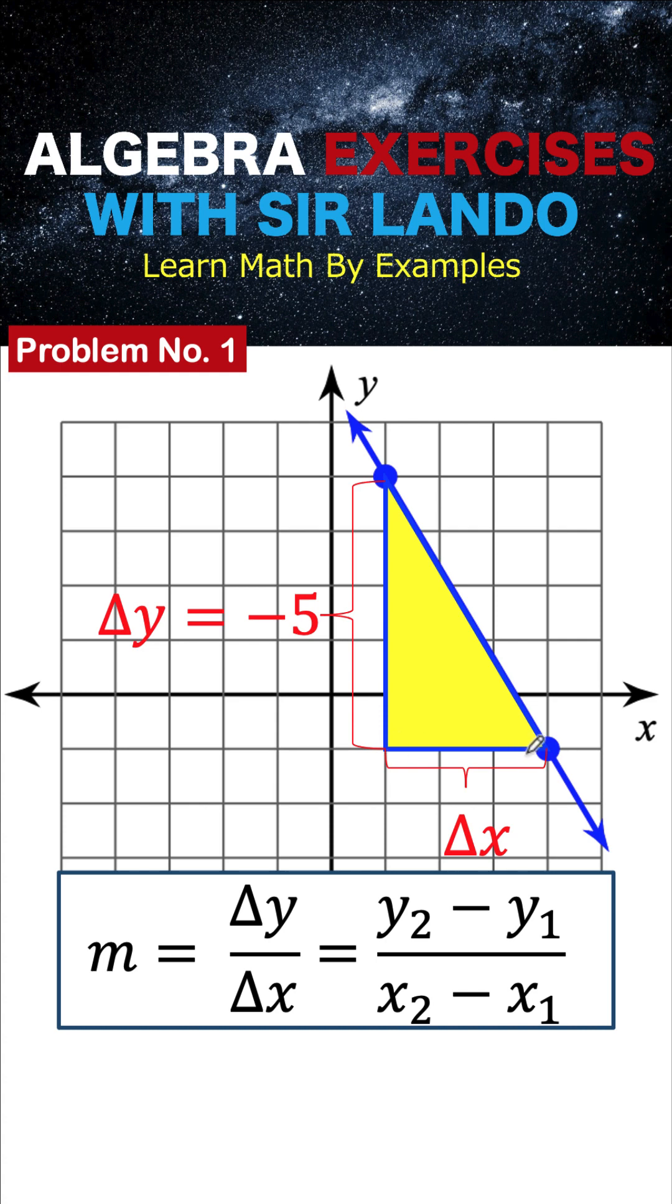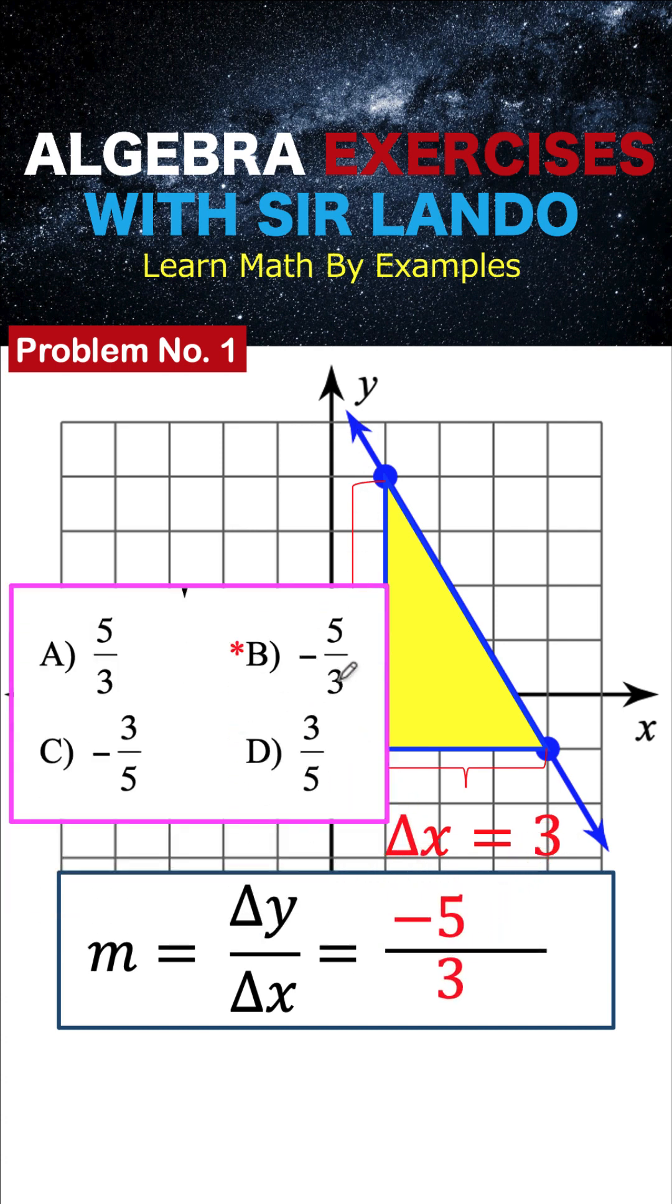And from this corner going to this point we need also to go to the right 3 units. And so change in x is 3. So the slope of this given blue line is letter b negative 5 over 3.